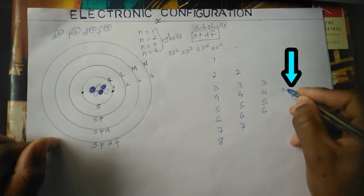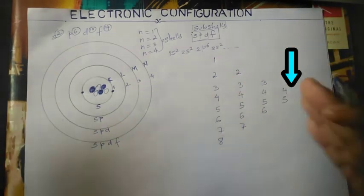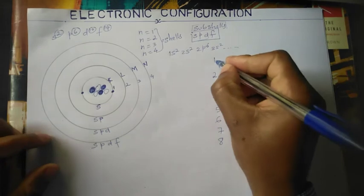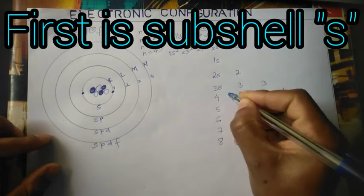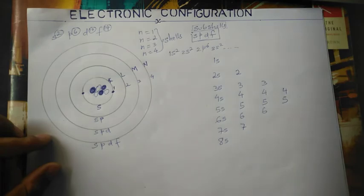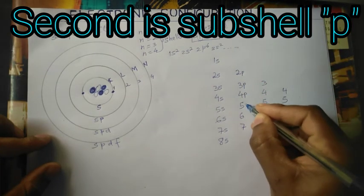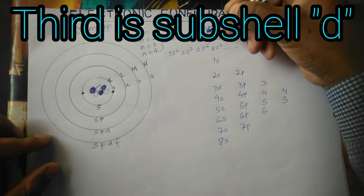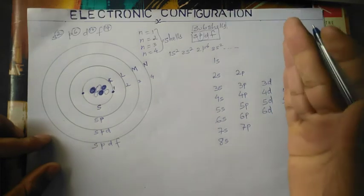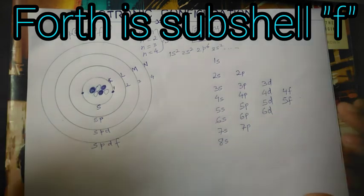This is a trick so we don't have to memorize things. You can see now it looks like a triangle. The first line — all of it — is labeled s, and s carries 2 electrons. The second line is p, and p carries 6 electrons. The third line is d, and d carries 10 electrons. The fourth line is f, and f carries 14 electrons.